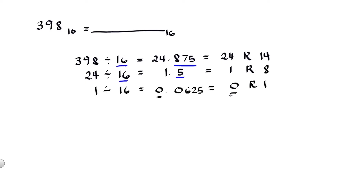Once you get 0, this is when you stop. Then focus on the remainders 14, 8, and 1, and convert them into hexadecimal numbers. 1 in decimal is equal to 1 in hexadecimal, 8 in decimal is equivalent to 8 in hexadecimal, and 14 in decimal corresponds to letter E in hexadecimal. 1 is our MSB, or most significant bit, and E is our LSB, or least significant bit.